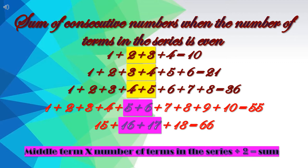So, sum of consecutive numbers when the number of terms in the series is even. We have taken 4 numbers: 1, 2, 3 and 4. 1 plus 2 plus 3 plus 4 is equal to 10. In the next series we have taken 6 numbers, and that is equal to 21. And in the third series I have taken 8 numbers starting from 1: 1 plus 2 plus 3 plus 4 plus 5 plus 6 plus 7 plus 8 is equal to 36.